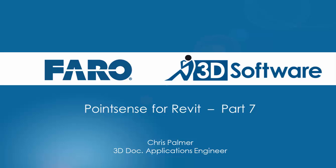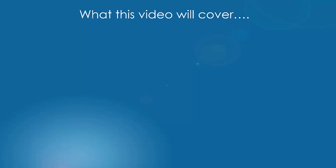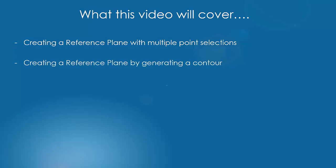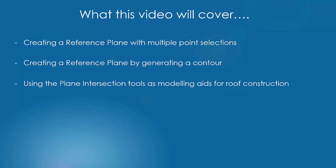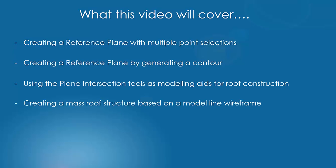Hi and welcome to part 7 of the Point Sensor Revit tutorial series. In this tutorial we will be specifically looking at creating a reference plane using multiple point selections, creating a reference plane by generating contours, using the plane intersection tools as modelling aids for roof construction, and creating a mass roof structure based on a model line wireframe.